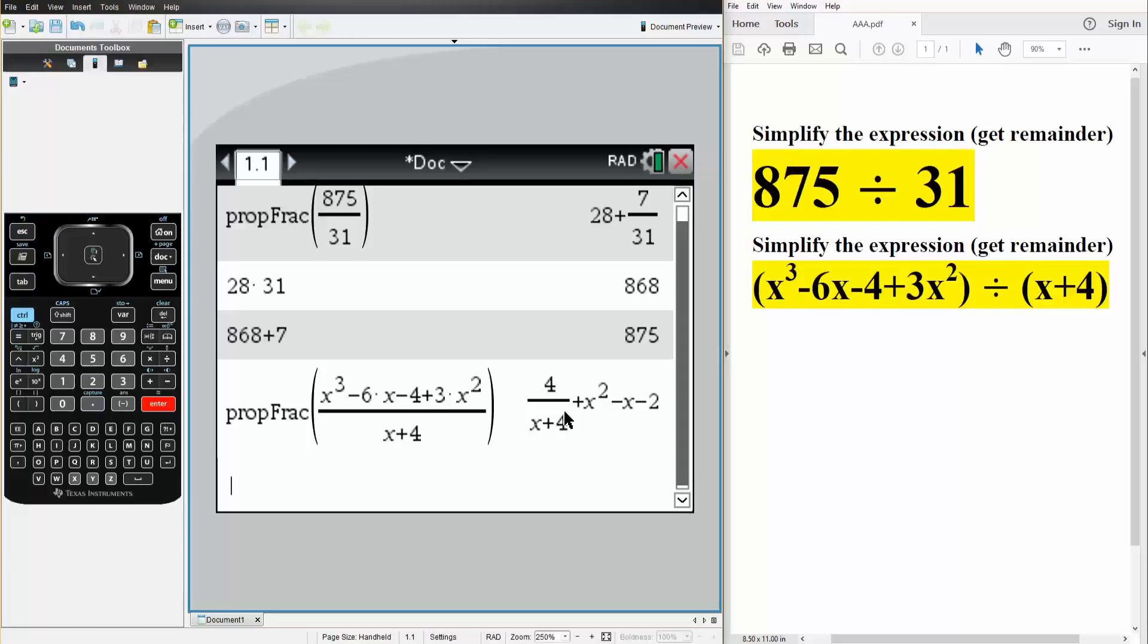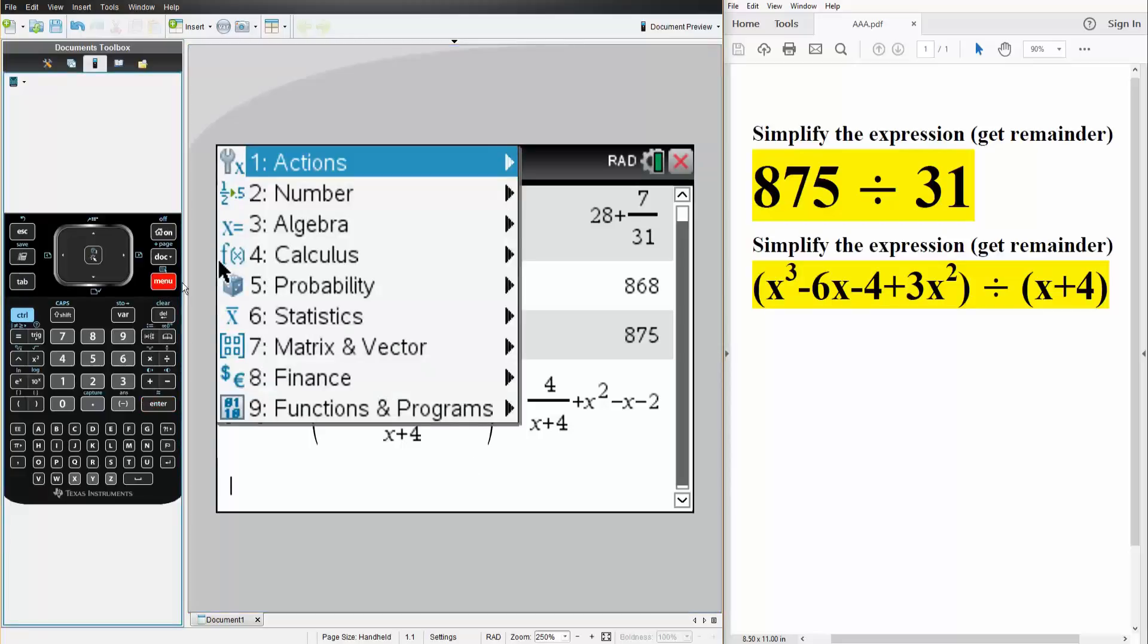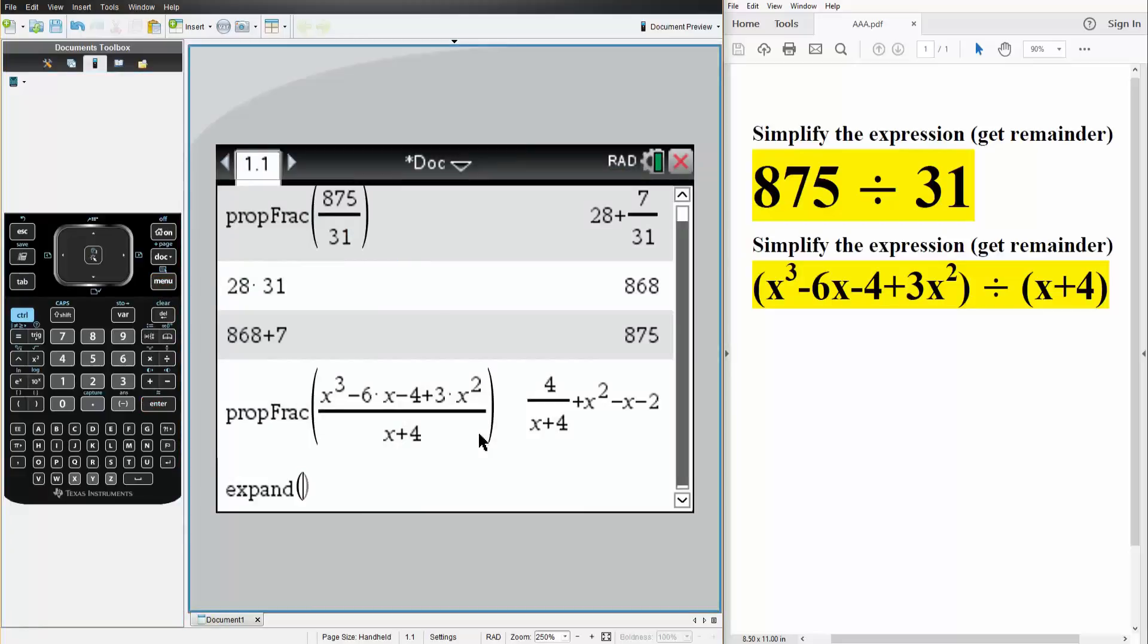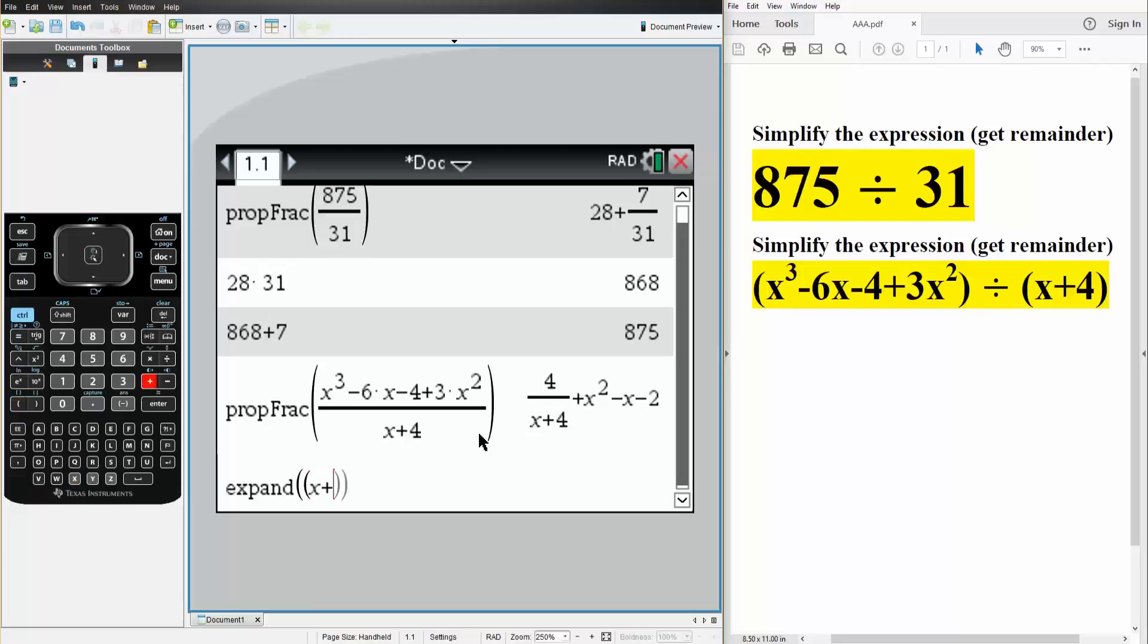And so if we solve this question by hand, our remainder would be 4. Because if we think about it this way, if I hit menu, I hit algebra, I hit expand. If I did x plus 4 times x squared minus x minus 2,